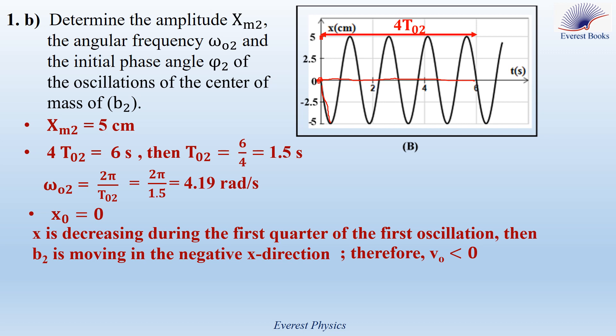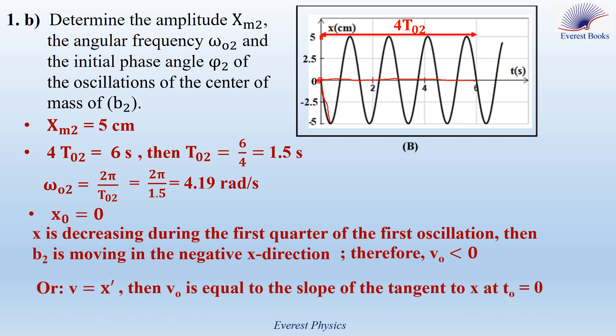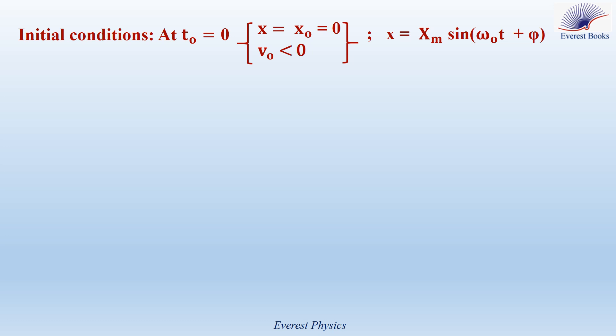Another method: v equals x prime, so v0 equals the slope of the tangent to the curve x at t equals 0. If this slope is negative, then v0 is negative; if positive, then v0 is positive. Looking at the tangent to the curve at t equals 0, the slope is negative, so v0 is negative. We now have the initial conditions: x0 equals 0 and v0 is negative.